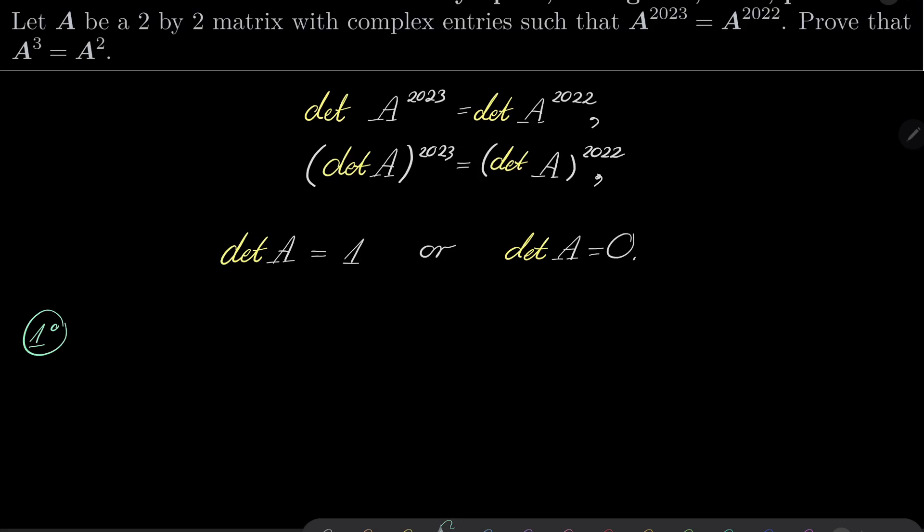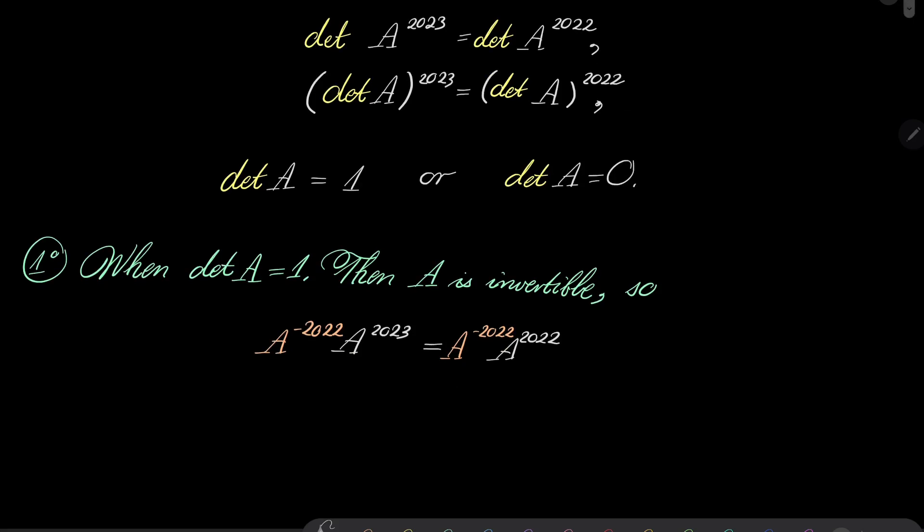First case, when the determinant of A equals one. Notice that then our matrix is of course invertible. It's invertible. So we can take our equation, our assumption once again, and we can multiply on both sides by A to the power minus 2022.